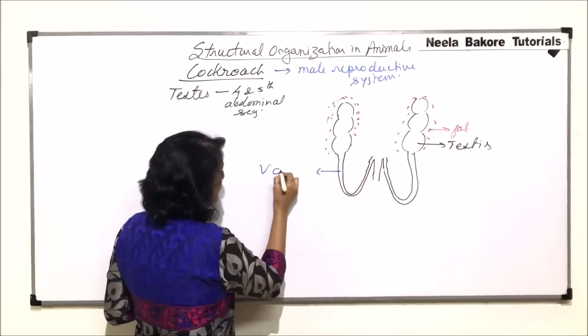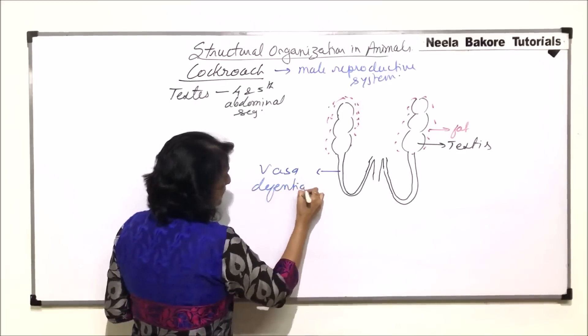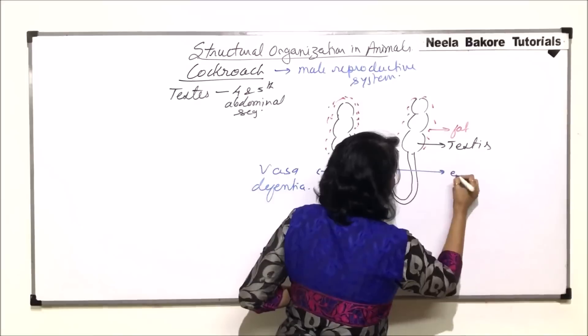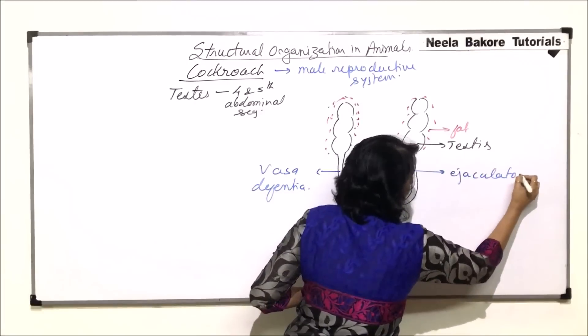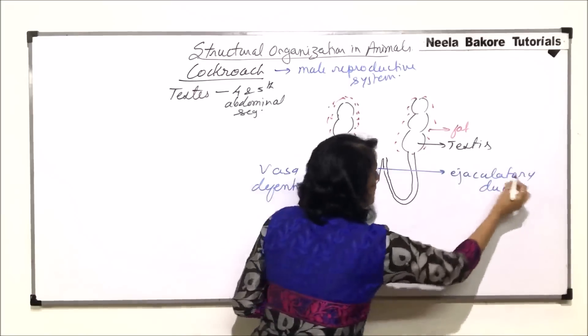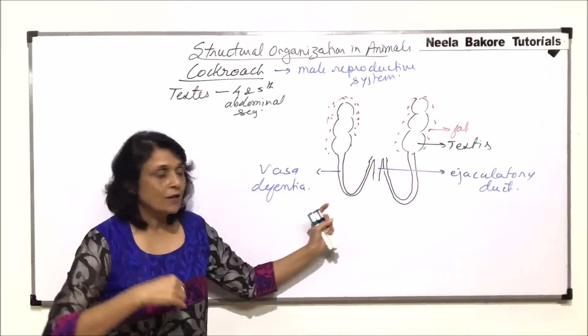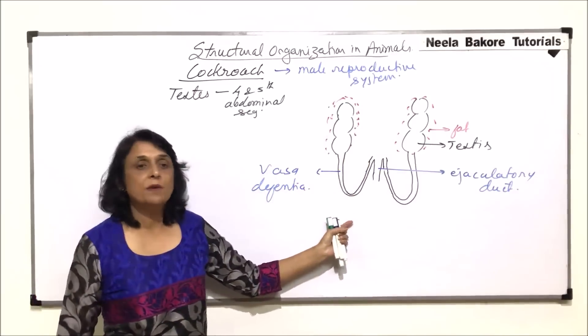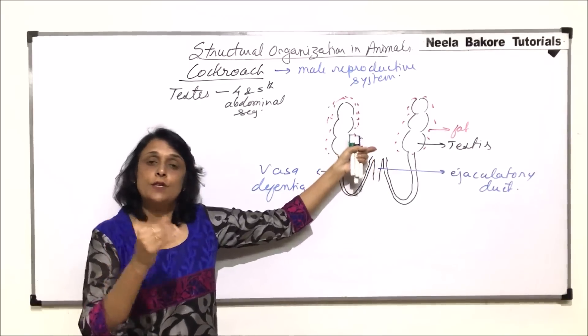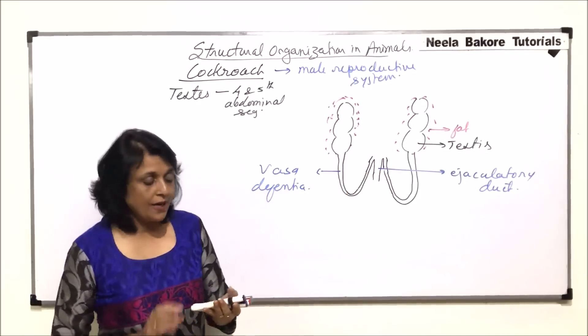That means they would go up to almost up to the fifth or sixth segment and now they will join to form one duct. So this is the vasa deferentia coming and here it is coming from the other testes. Let us label this as the vasa deferentia, and both of them join to form an ejaculatory duct.